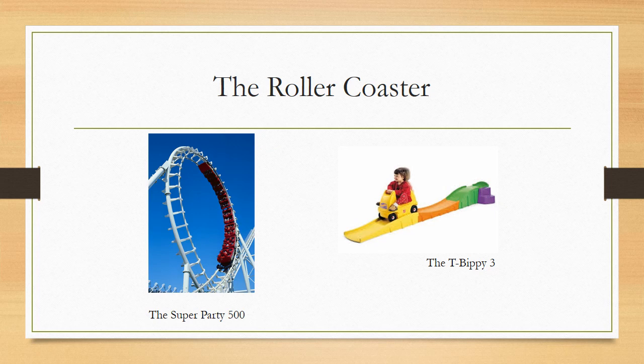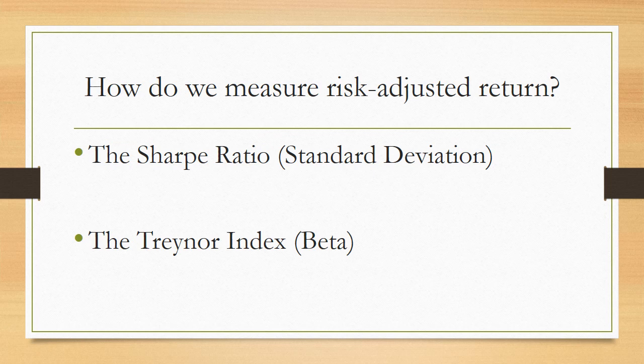What if there were standardized numbers you could use that would measure a roller coaster's fun against how much fear it would induce — a measurement of fun and fear all in one number? That number could easily tell you: this roller coaster would be fun but not too scary, or this other one might be too much. That's kind of like the Sharpe Ratio and the Treynor Index — they are standardized numbers we can use to compare investments and give us a pretty good idea of the level of return and risk.